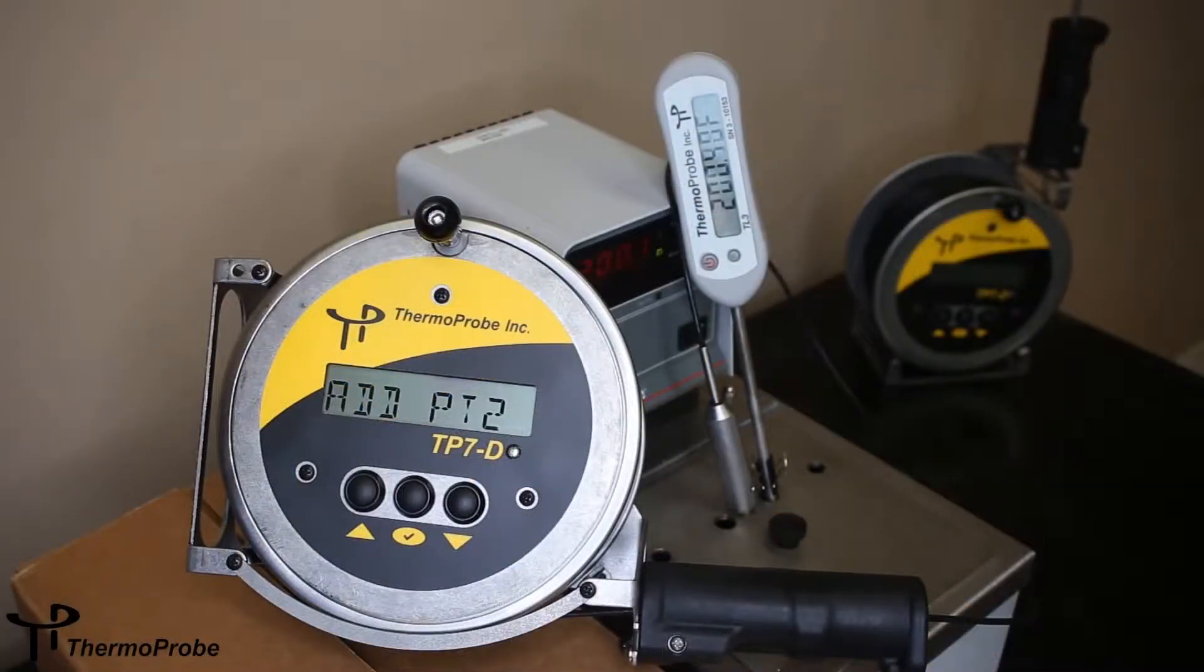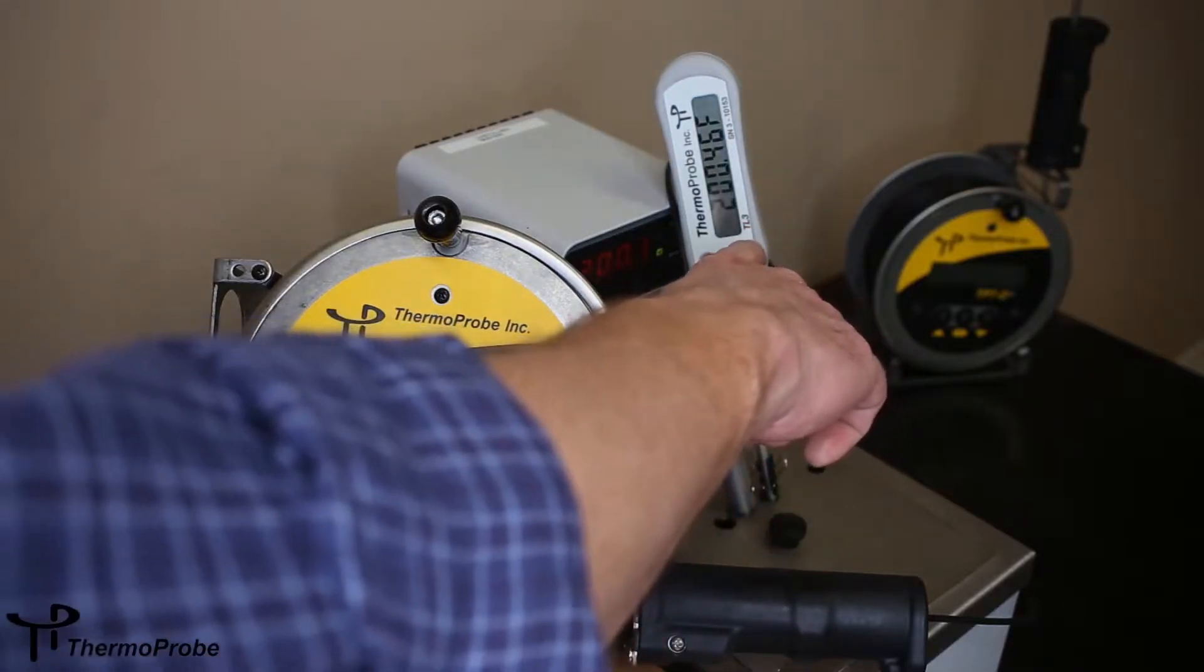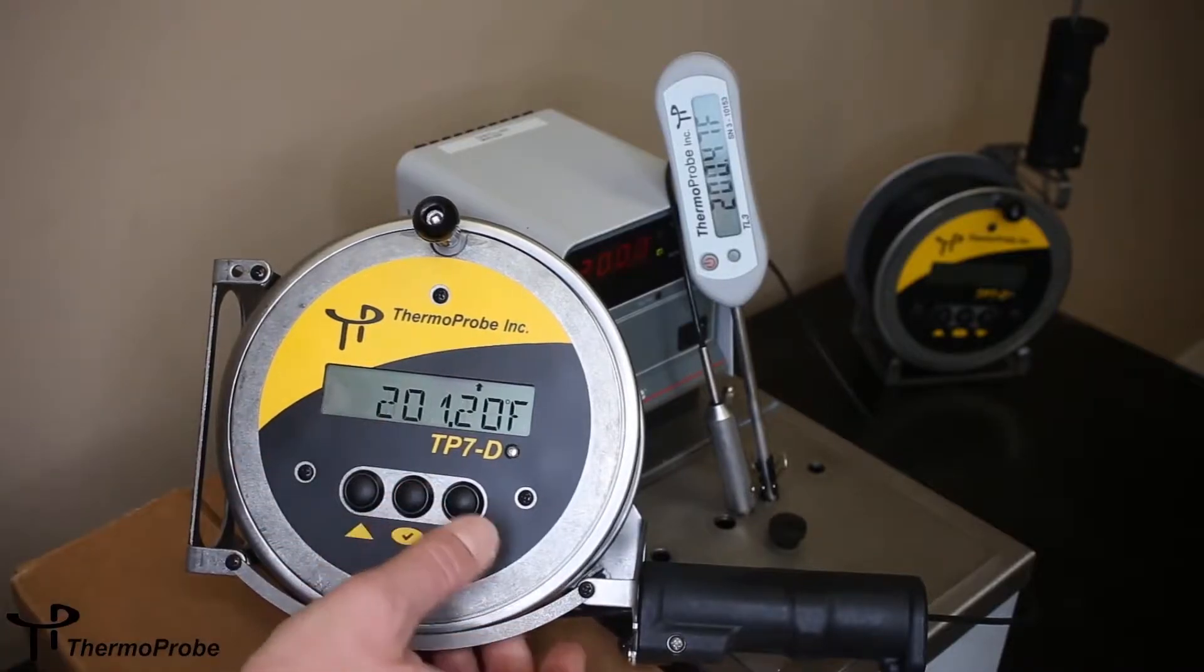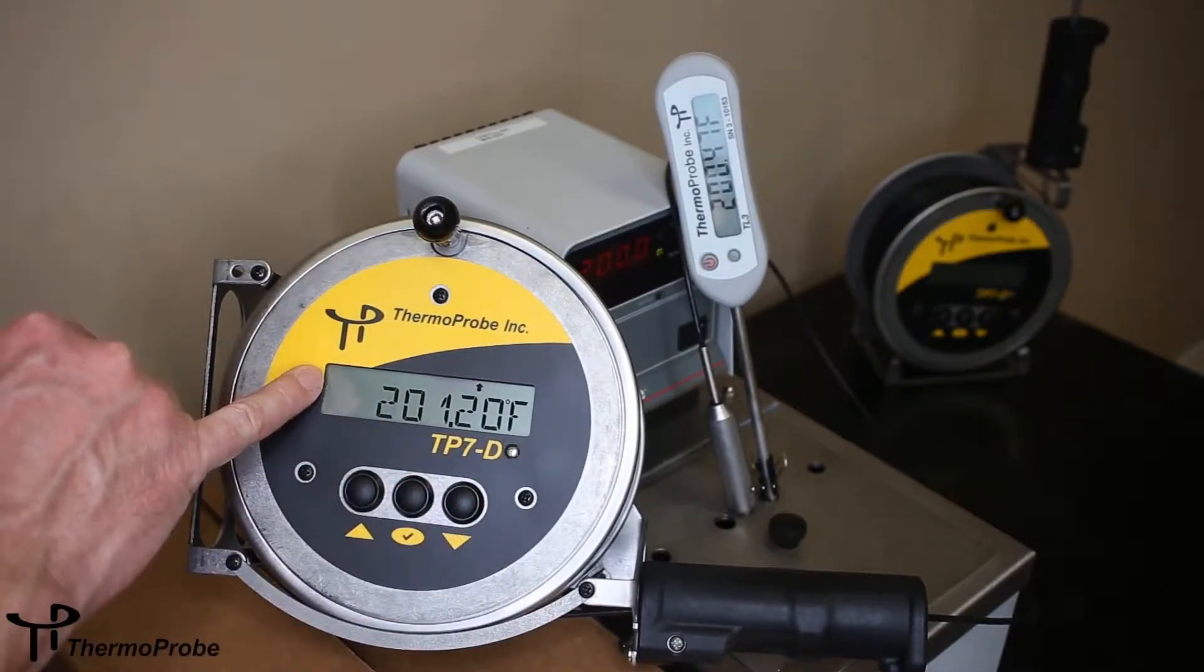To continue the calibration adjustment on the thermoprobe, we moved to a 200 degree Fahrenheit bath. You can do the same using a boiling pot of water. Again, we used our same reference and moved it over. We're showing add point two. We want to hit select, and now we're showing calibration of point two.